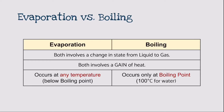Before we continue, let us look at the difference between evaporation and boiling. Both involve a change of state from liquid to gas and involve the gain of heat. The difference is that evaporation occurs at any temperature below boiling point, while boiling occurs only at boiling point, which is 100 degrees Celsius for water.